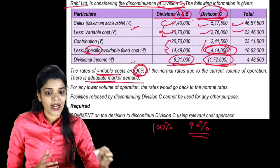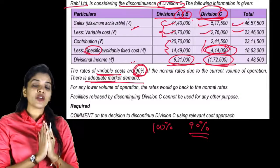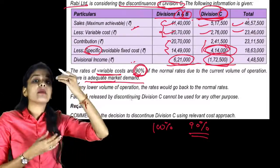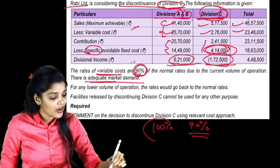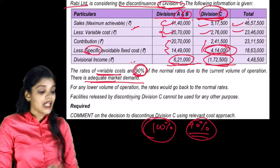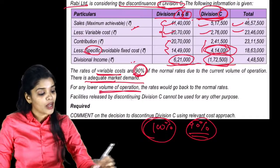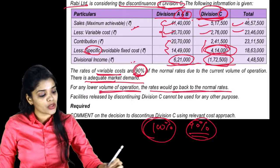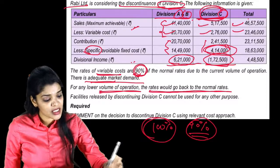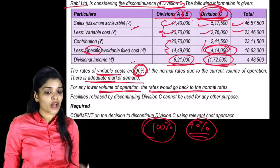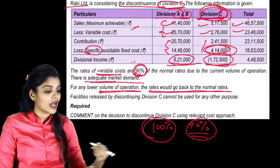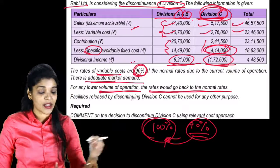There is adequate market demand. Because of adequate market demand, volume of production is higher. Because volume of production is higher, variable cost is 10% less. Where 100% should be incurred, only 90% variable cost is being incurred. But if volume of operation decreases, rates would go back to normal rates.